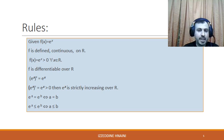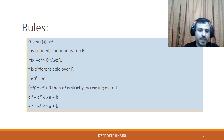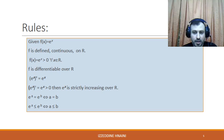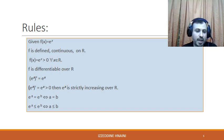Since the derivative of eˣ is eˣ, and eˣ is always positive, then the function eˣ is strictly increasing over ℝ, which is very clear using the graph. Now, since the function f is strictly increasing,